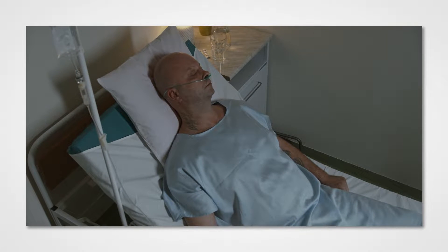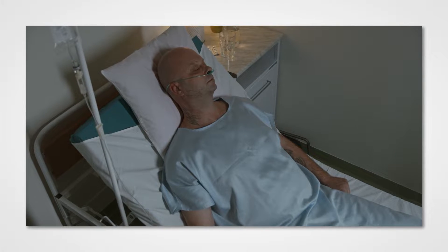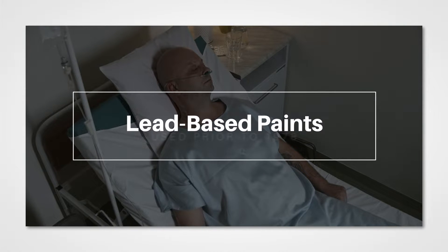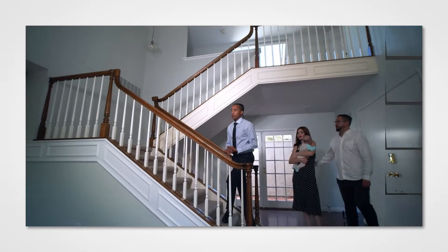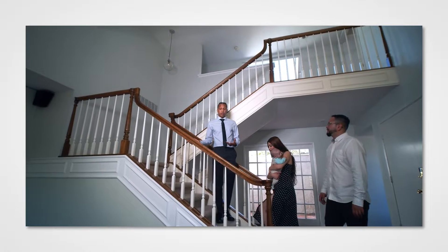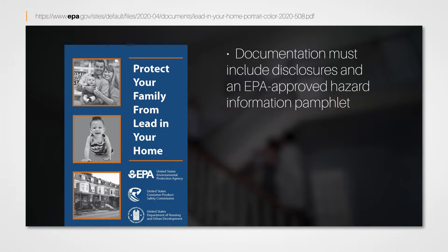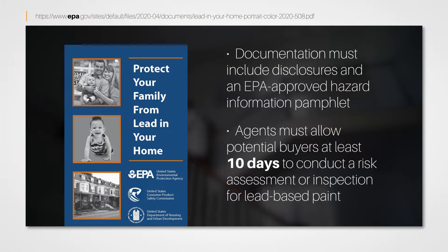Excessive exposure to lead can be toxic to humans and animals. The main form of lead contamination you'll need to be aware of is the presence of lead-based paint, which was commonly used in homes built prior to 1978. When you're representing a home that was built prior to 1978, part of your documentation must include disclosures and an EPA-approved hazard information pamphlet. You also must allow potential buyers at least 10 days to conduct a risk assessment or inspection for the presence of lead-based paint.